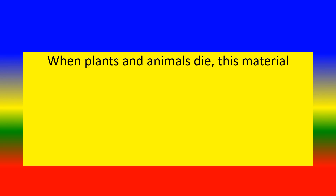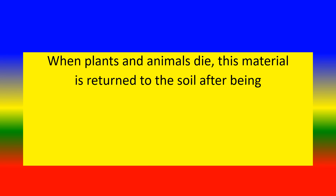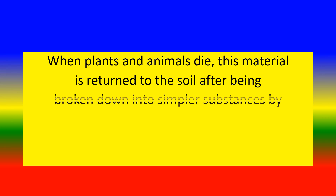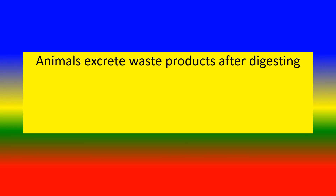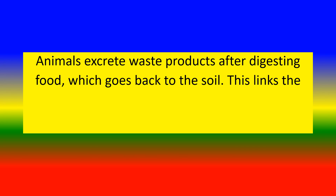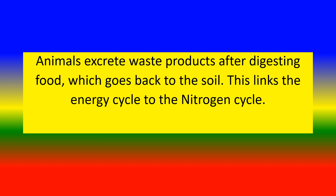When plants and animals die, this material is returned to the soil after being broken down into simple substances by decomposers such as insects, worms, bacteria, and fungi. Animals also excrete waste products after digesting food, which goes back to the soil. This links the energy cycle to the nitrogen cycle.